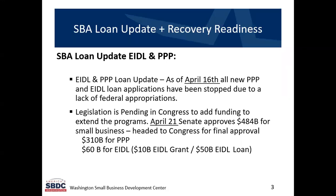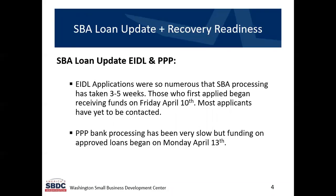The EIDL and PPP both began towards the end of March, but as of April 16th both of those programs ran out of money and stopped taking applications. As of April 21st, the Senate did approve $484 billion for small business, and that's headed to Congress for approval and then to the President for signature. Of that money, about $310 billion is going to be applied to the PPP to open that program up again, and about $60 billion is going to be applied to the EIDL — broken up into about $10 billion for the EIDL loan advance which converts to a grant, and about $50 billion available for loans.